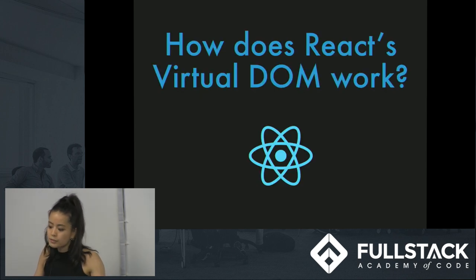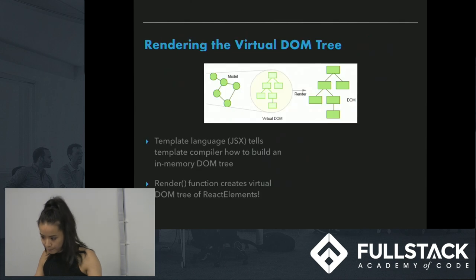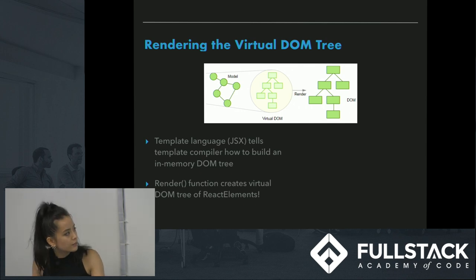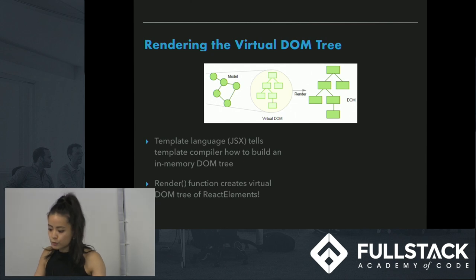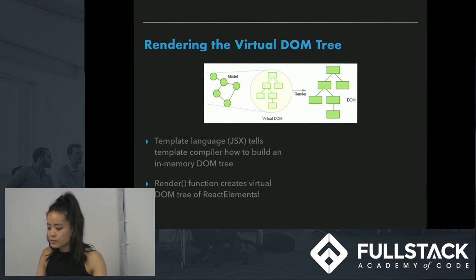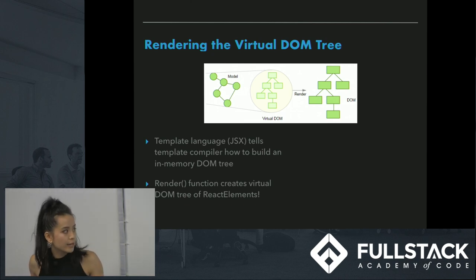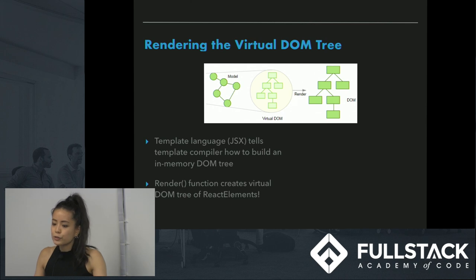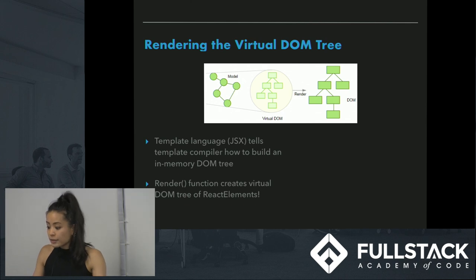So how does React's virtual DOM work? On the initial render, JSX will tell the template compiler how to construct the virtual DOM tree. Then through another process, that virtual DOM is rendered to the real DOM. So when you're calling react-dom.render, you're building that virtual DOM tree in memory. You can think of it as when you're calling the render function into a component, you're rendering each of those nodes in that virtual tree.